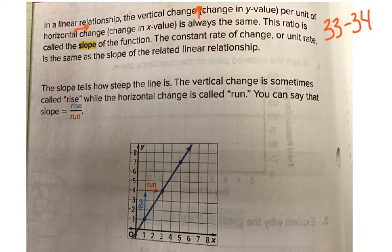The slope tells how steep the line is. The vertical change is sometimes called the rise, while the horizontal change is called the run. So you can say that slope equals the rise over run. This is huge. You will hear that a lot during your career as a math student.